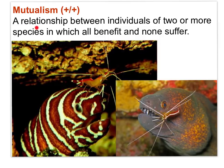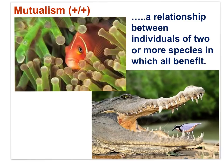Mutualism is defined as a relationship between individuals of two or more species in which all benefit and none suffer. In these photographs, you can see cleaner shrimp cleaning — picking the parasites off the skin and teeth of moray eels. The shrimp receive food, while the eels are cleaned of parasites and disease-causing organisms. The clownfish and the anemone also have a mutualistic relationship: the clownfish wards off fish that might harm the anemone, and the clownfish is protected from predators by the anemone's stinging tentacles. The crocodile gets parasites removed by a bird, which receives food — both species gain.